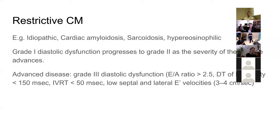I used to think that restrictive cardiomyopathy automatically meant grade three diastolic dysfunction with a high E wave, low A wave, and E/A ratio of two — but that's not the case. It just describes a thick, stiff ventricle. You can start with mild diastolic dysfunction and as the disease progresses, the severity worsens.